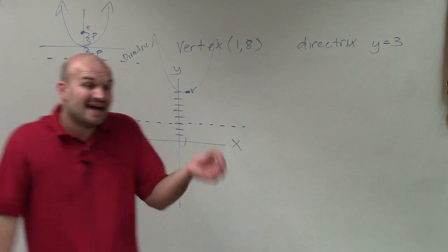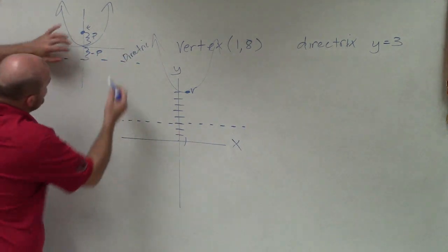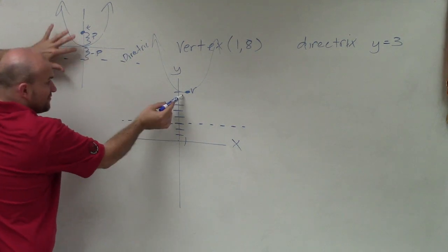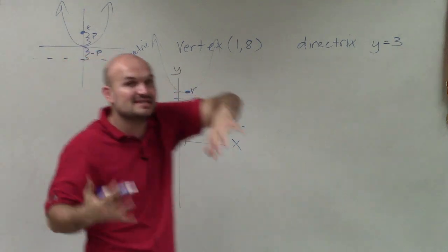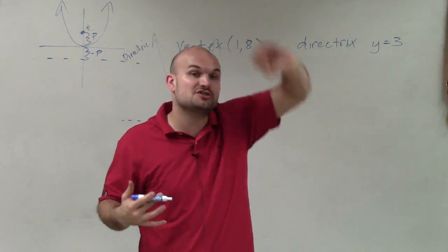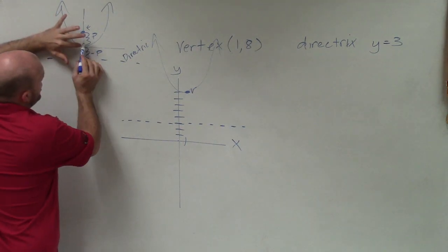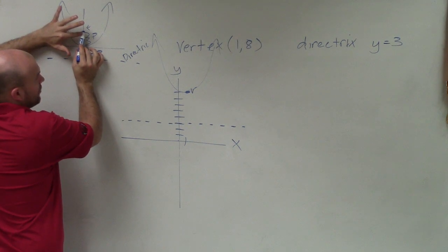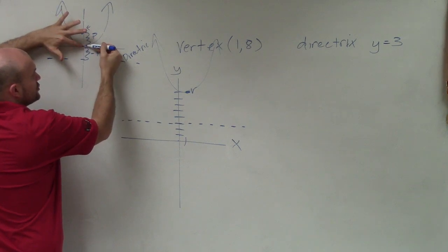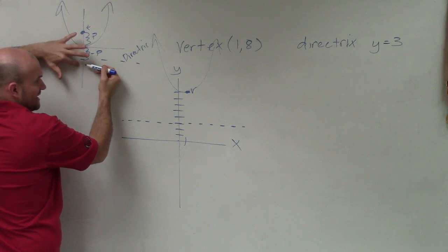Now to find that distance, remember the distance from the directrix to the vertex is the exact same distance from the vertex to the focus. However, they're in different directions. So to go to the focus is in one direction, in this case positive. To go to the directrix would be negative.